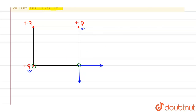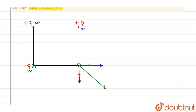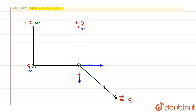Now, the electric field due to the third charge will be in this direction. Let us find the net of these three vectors. These two are equal in magnitude, so their resultant will be along the diagonal of the square. This will be the net resultant direction of the electric field at the fourth corner.